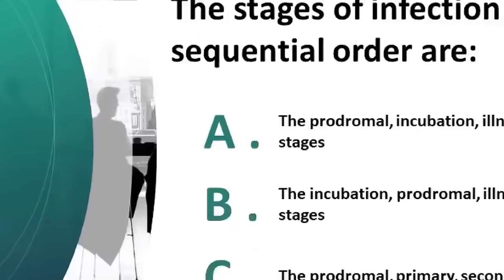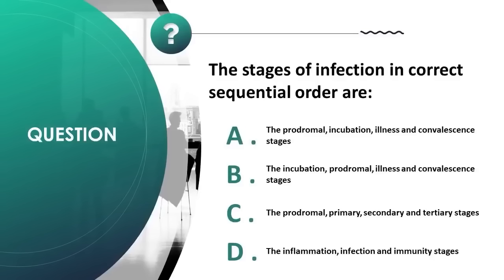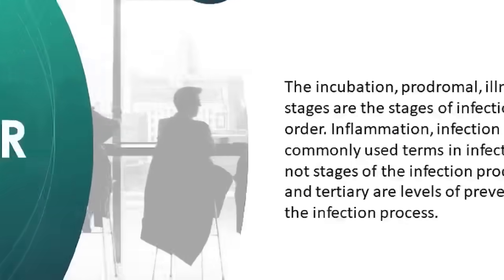The stages of infection in correct sequential order are: A) prodromal, incubation, illness, and convalescence; B) incubation, prodromal, illness, and convalescence; C) prodromal, primary, secondary, and tertiary; D) inflammation, infection, and immunity. Correct answer is B. The incubation, prodromal, illness, and convalescence stages are the correct sequential order.